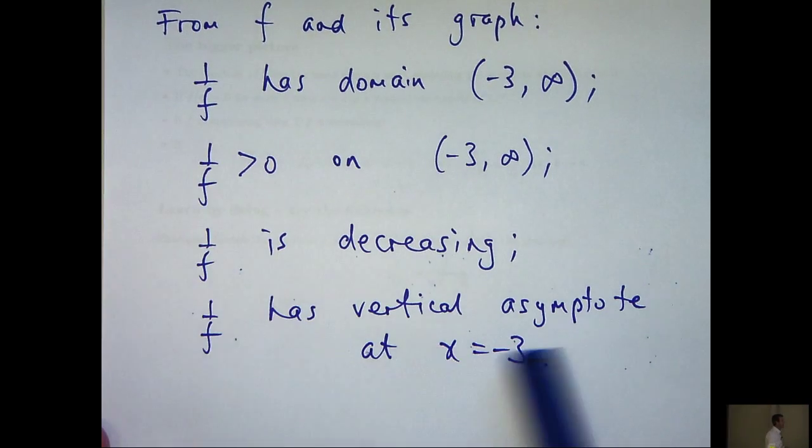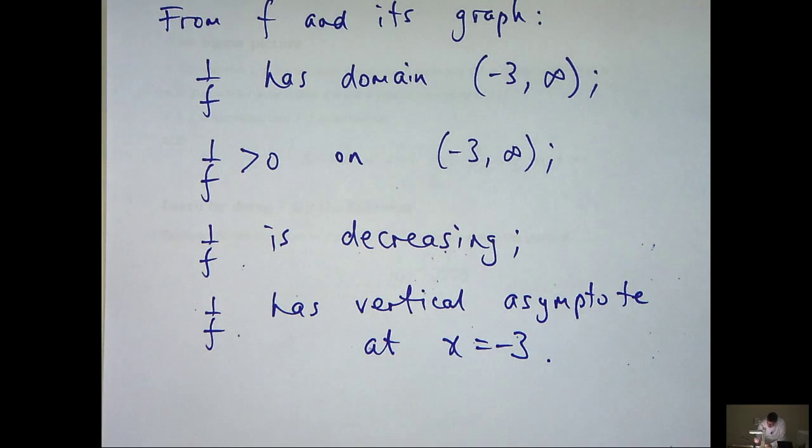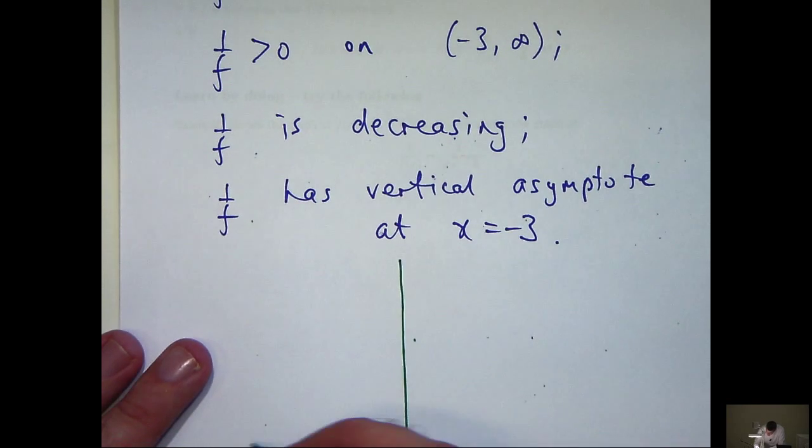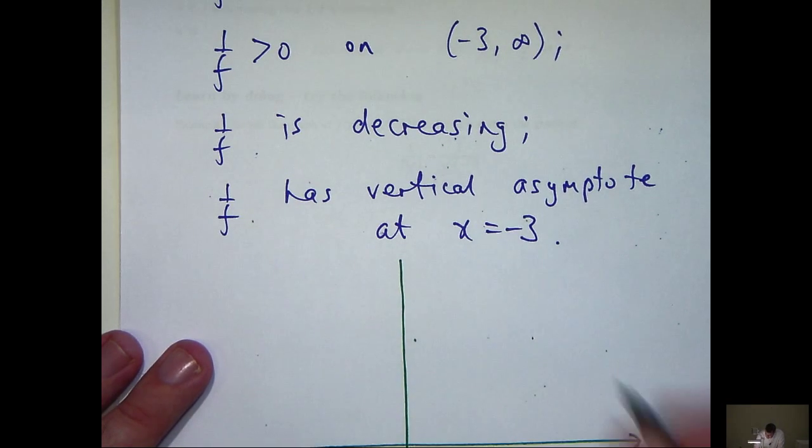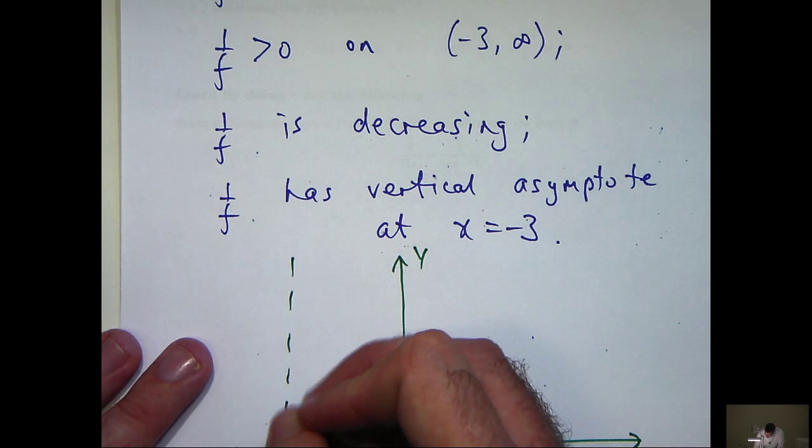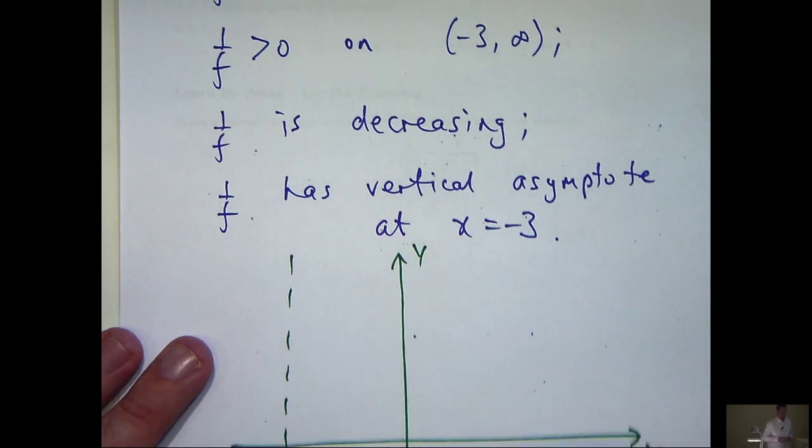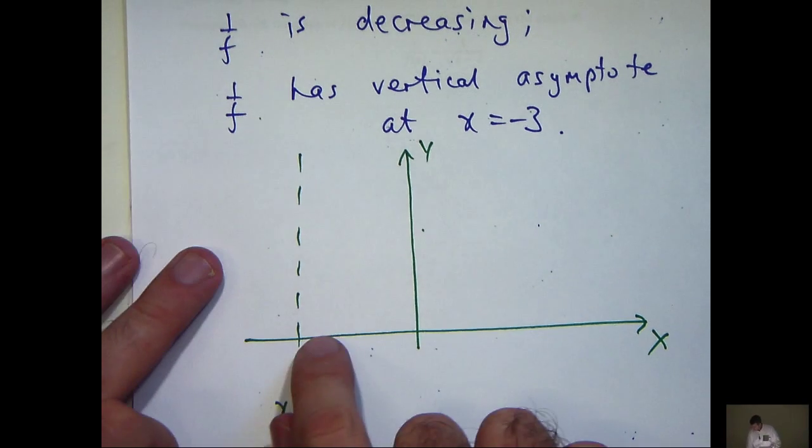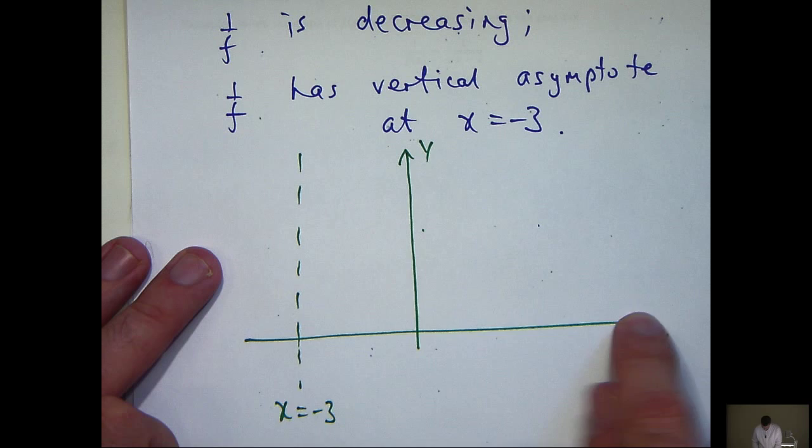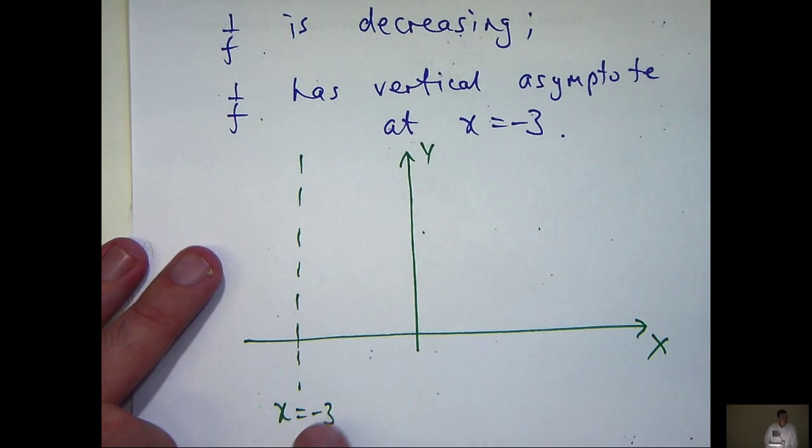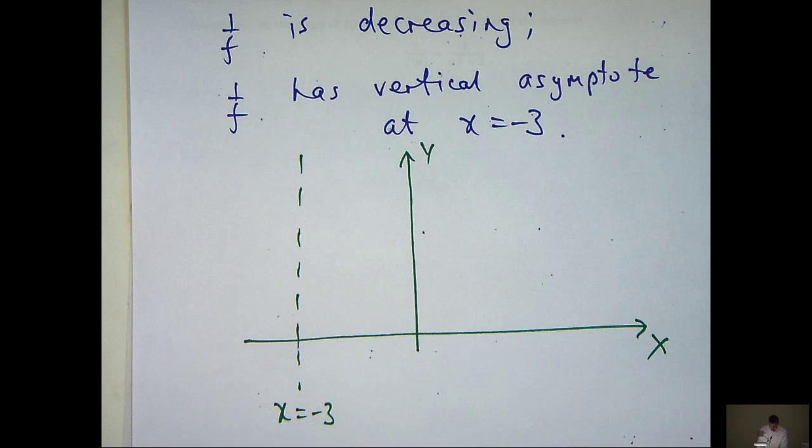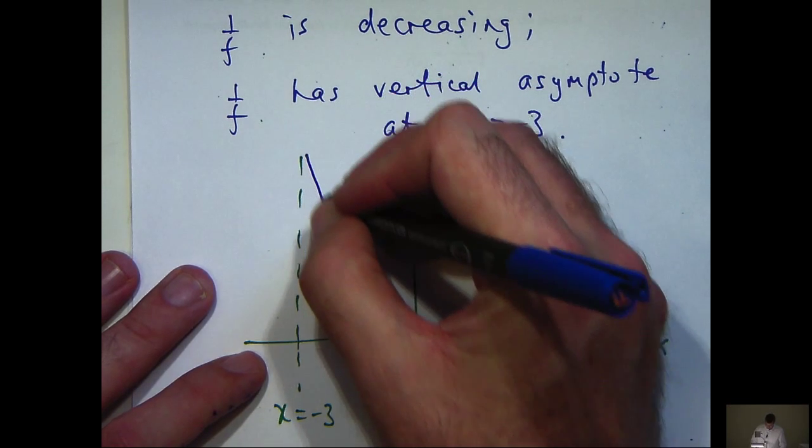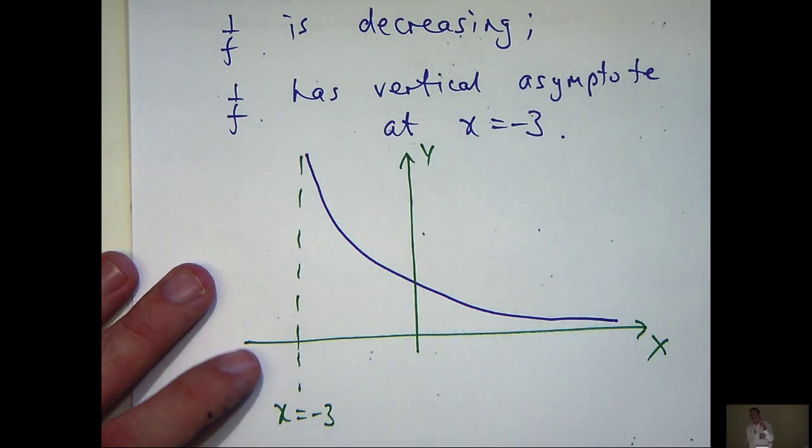Alright, let's use these pieces of information to sketch our curve. So here I'm drawing in the vertical asymptote x equals minus 3. So we want the domain, the domain of 1 on f is here, not including the point x equals minus 3. The graph will be positive and decreasing. So it should look something like this.